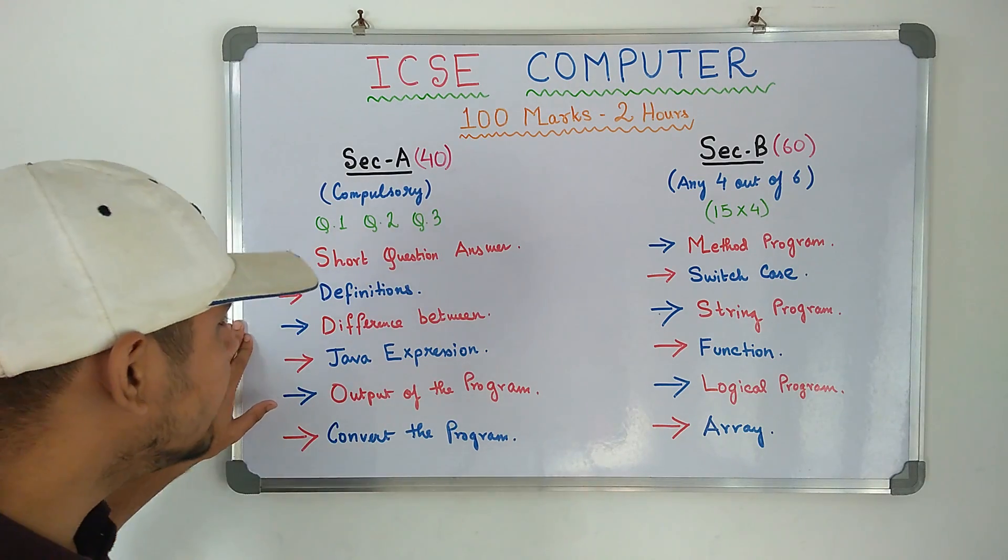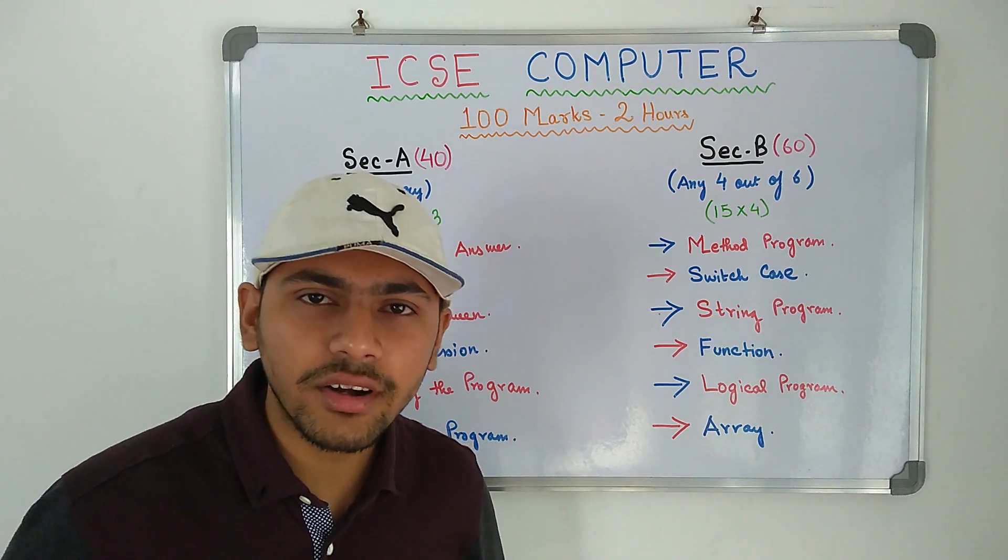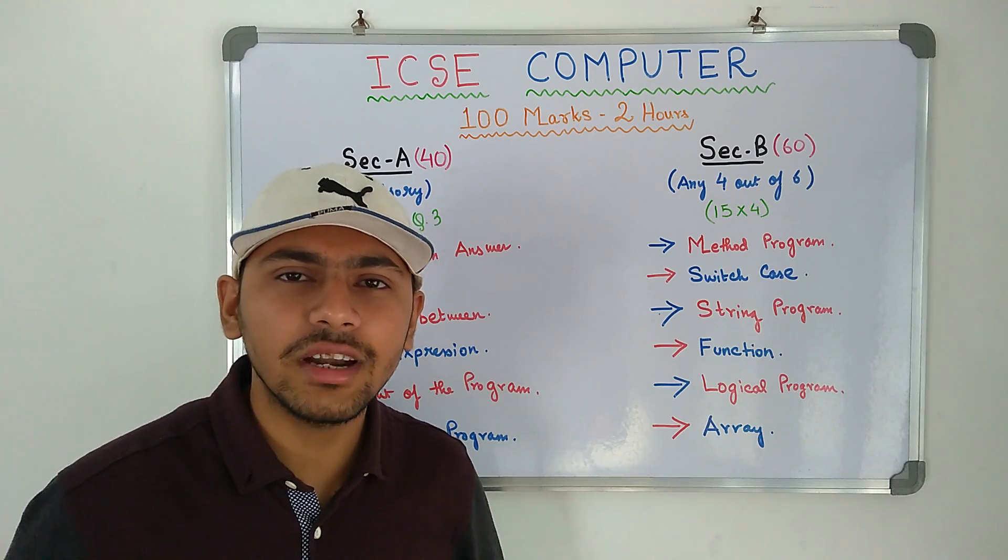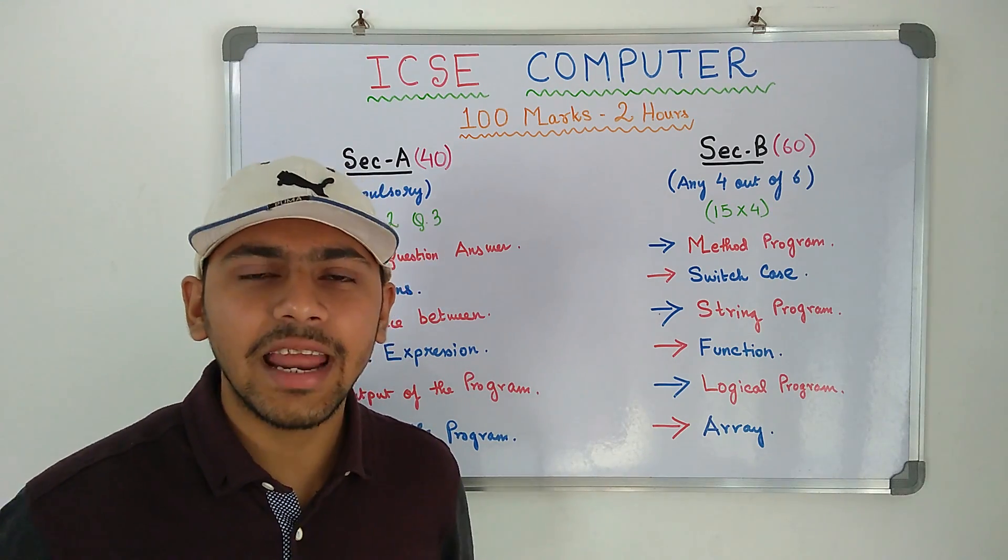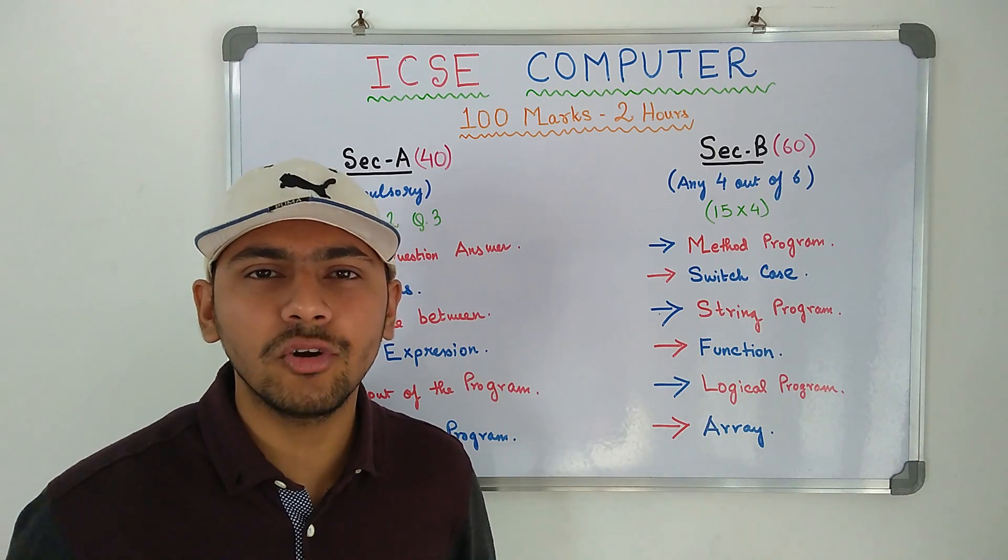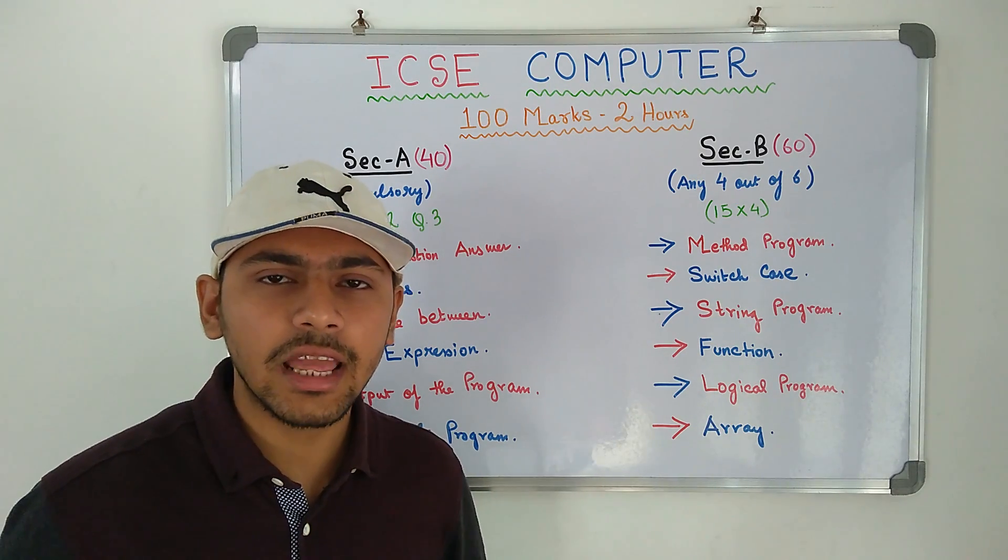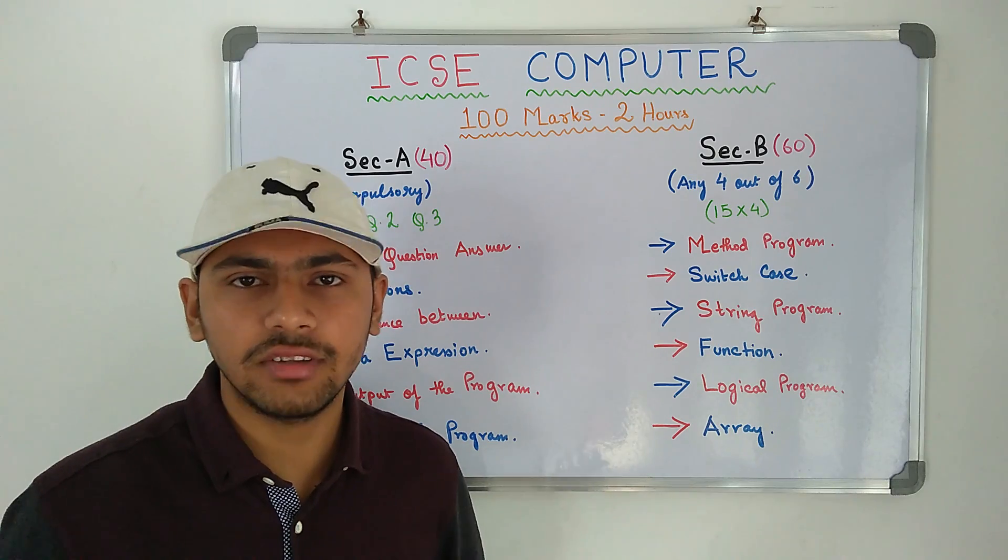Then you will have difference between. Difference between is also very important in this question paper. 3 to 4 difference between are asked. Like difference between while loop, do while loop, difference between primitive data type and non-primitive data type, things of that sort.